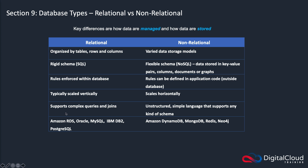Relational databases support complex queries and joins. You don't really need to know some of this for the Cloud Practitioner, but you certainly do at architect level or any of the associate certifications. Basically, it means you can perform queries across multiple tables. Examples of relational databases are Amazon RDS, which we'll be covering in this section, and then Oracle, MySQL, IBM DB2, and PostgreSQL.